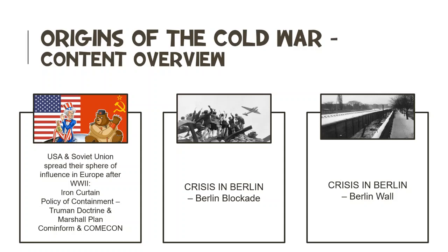This includes things like the Iron Curtain, America's policy of containment — which consisted of the Truman Doctrine and the Marshall Plan — and the Soviet Communist Information Bureau, or Cominform, and the Council for Mutual Economic Assistance, or COMECON. You must also study the Berlin Crisis, the period between 1948 and 1961 in Berlin, with specific focus on the Berlin Blockade and the Berlin Wall. Remember, the examiner can focus on any of these aspects in your NSC examination, so it is very important that you study all of this content.